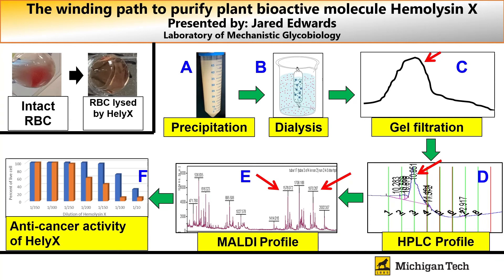What we really need to find out is what other types of activity this sample has. When we test it towards other mammalian cell lines — particularly cancer cells — we're witnessing anti-cancer activity. At a 1-in-200 dilution of the sample, you can see up to 40 percent of these cancer cells dying off, and even more at the 1-in-100 dilution, where you're seeing almost all the cells dying off.